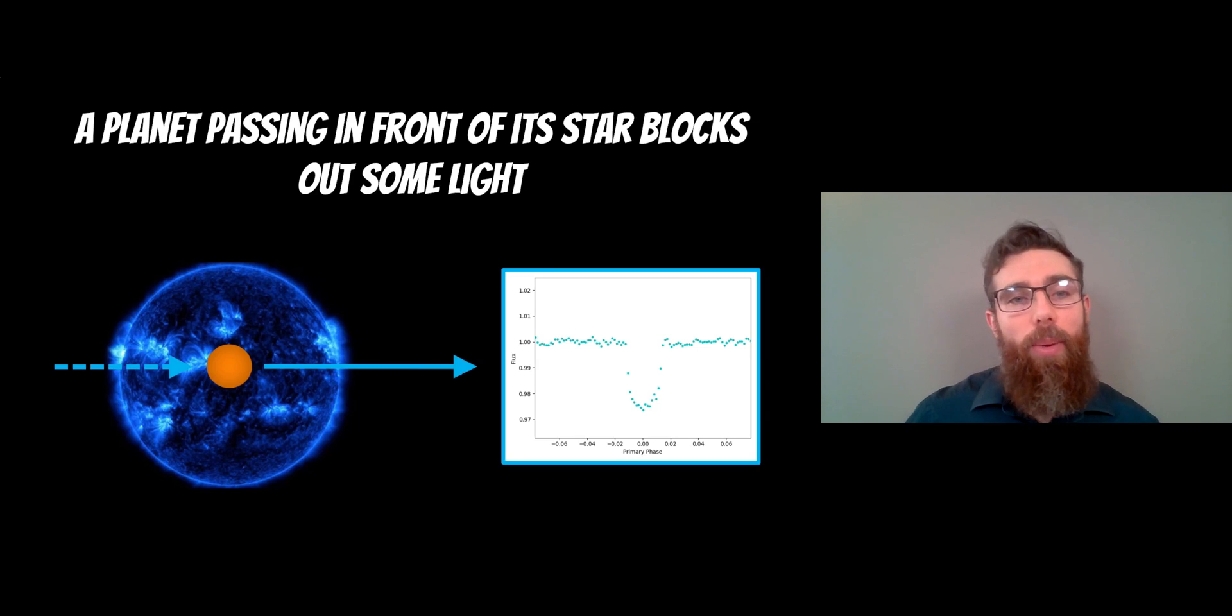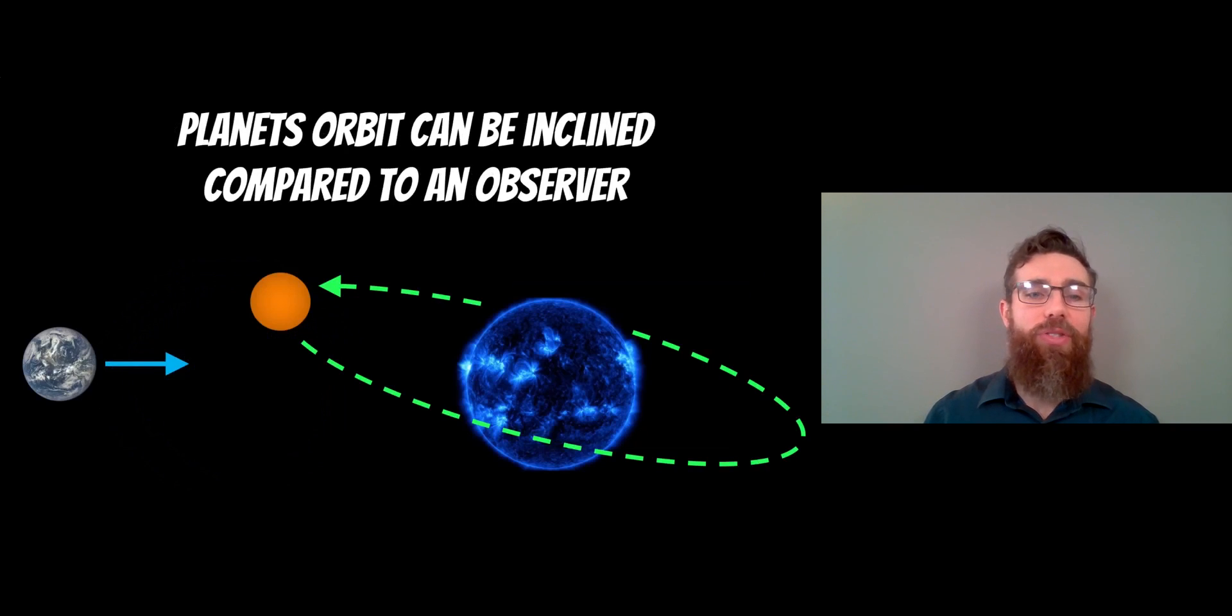It's a fairly straightforward method, but the inclination of that orbit of that planet can alter the transit shape. I'm going to have a look at that and why it alters the shape. So if we're looking from Earth or from some reference point where we're taking the measurement, the orbit of the planet is going to have some inclination.